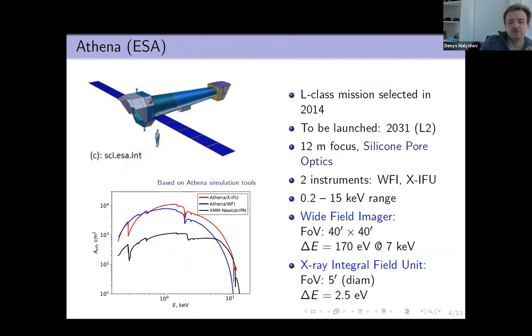Next mission will be ATHENA which will be ESA mission. It was selected as a large class mission in 2014 and hopefully will be launched in 2031. It will be really large satellite with 12 meter focal length. It will host two instruments, wide field imager and X-IFU field unit. Both will have very large field of view and very high effective area. You can see here that in comparison to XMM improvement will be again factor of 10 or even 100.